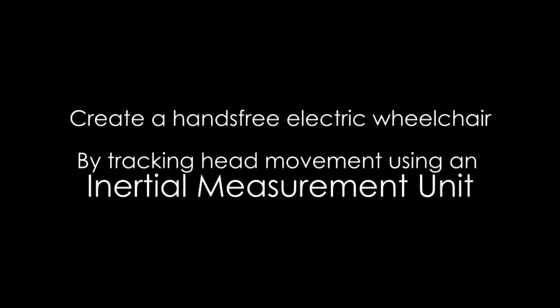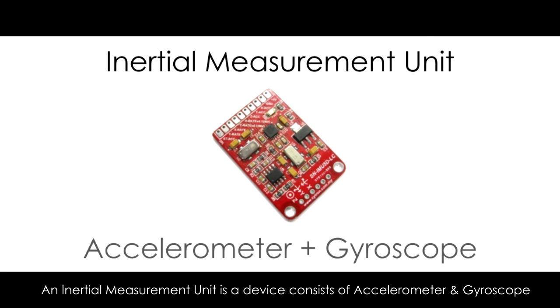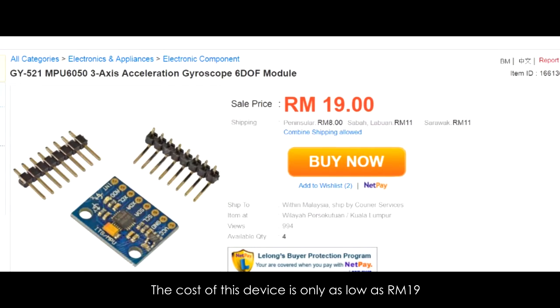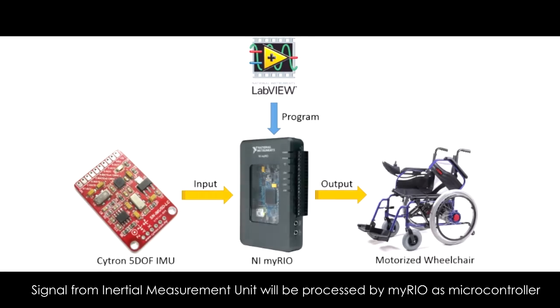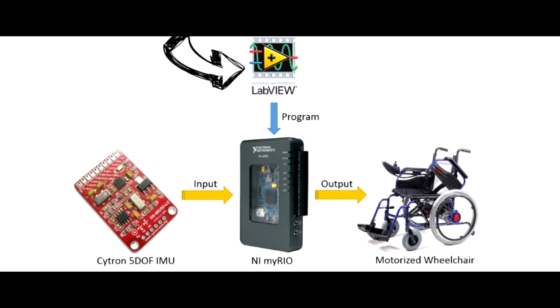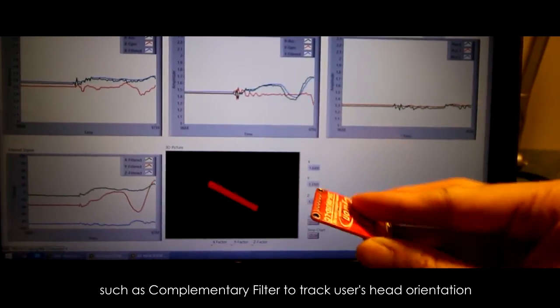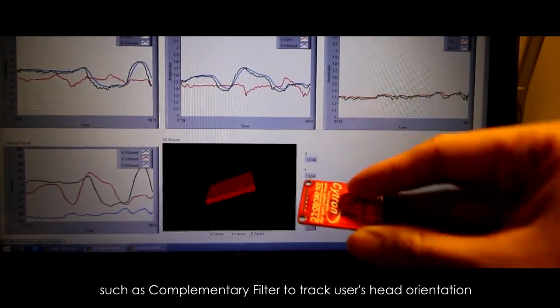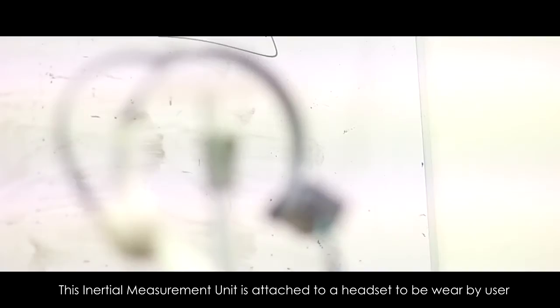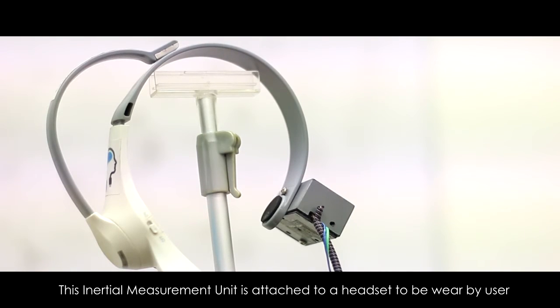In this project, we will create a hands-free electric wheelchair by tracking head movement using an inertial measurement unit. An inertial measurement unit is a device consisting of an accelerometer and gyroscope. The cost of this device is only as low as 19 ringgit. Signal from the inertial measurement unit will be processed by myRIO as microcontroller. LabVIEW is used to program myRIO with appropriate algorithms such as complementary filter to track the user's head orientation. This inertial measurement unit is attached to a headset to be worn by a user.